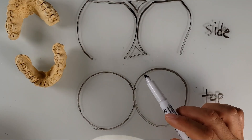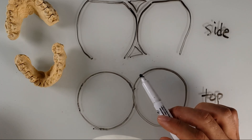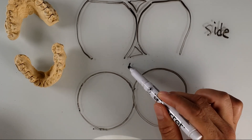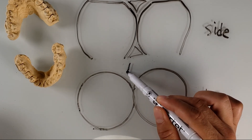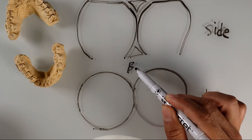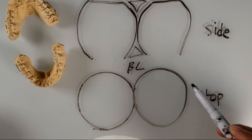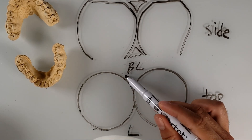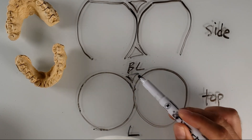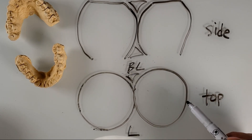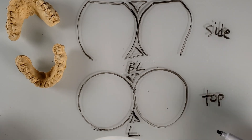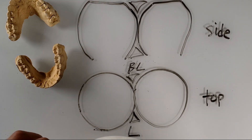Now if we're looking at this from the top, we could call this the buccal or the labial, and then this would be the lingual. So this would be the buccal or labial embrasure, and this would be the lingual embrasure.